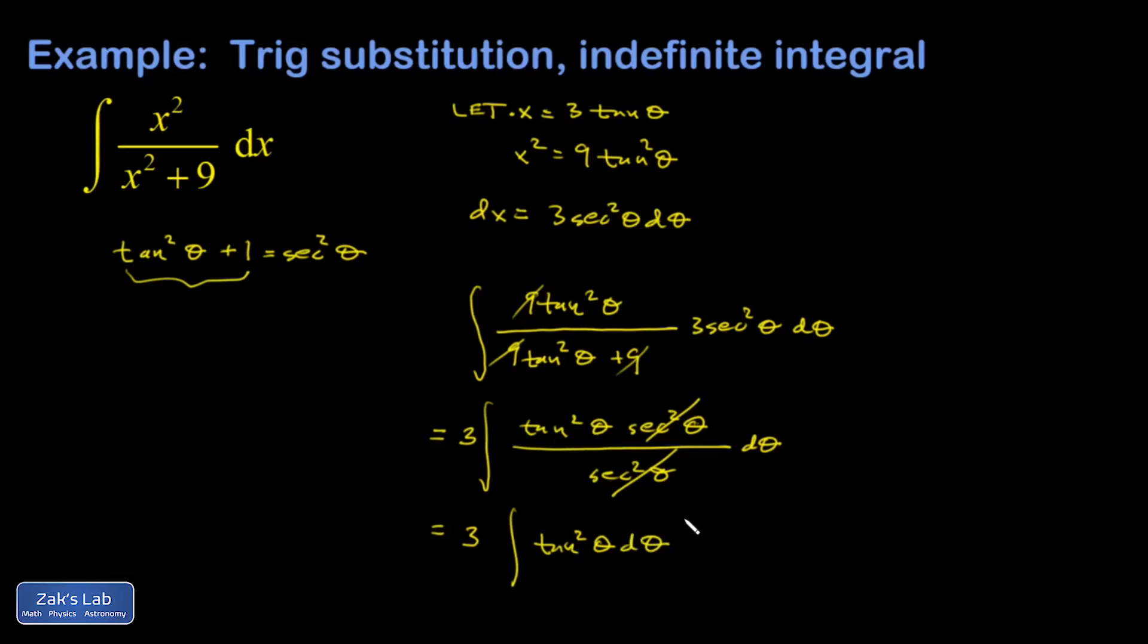So this is just a classic trigonometric integral. How do you handle a tangent squared? One of the first things you want to think of is using this Pythagorean identity. And I'm going to turn it around and say tangent squared is secant squared minus 1. And this is a good thing because I know how to integrate secant squared. It's just the derivative of the tangent function.